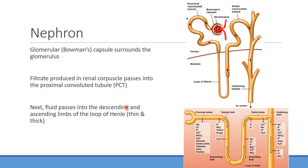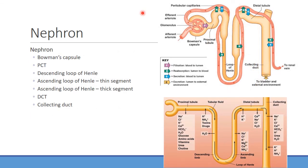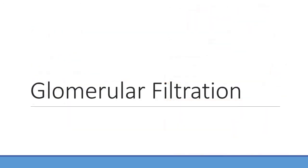After the proximal convoluted tubule, filtrate passes through the descending and ascending loop of Henle — there's a thin and a thick segment of the ascending loop, which have different functions. Then it goes to the distal convoluted tubule and finally the collecting duct — some overlap between the cortical collecting duct and the deeper medullary collecting duct. Once urine is finally formed, it empties into the minor calyx. The general flow: Bowman's capsule → proximal convoluted tubule → descending loop of Henle → ascending loop (thin to thick) → distal convoluted tubule → collecting duct.